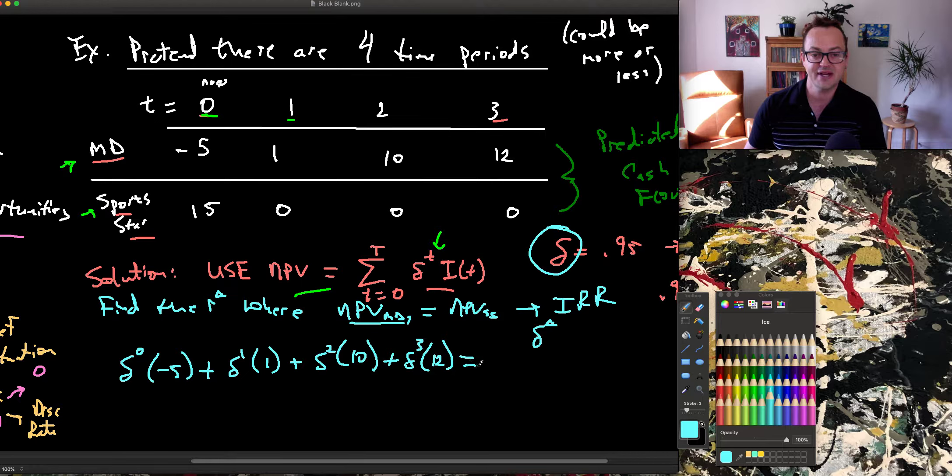And I'm going to set that equal to the NPV for being a sports star. And again, delta 0 times 15, and then plus 0, 0, 0. I'll put that in plus 0, 0, and 0, because all three of these are 0.